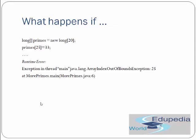For example: if we have a long array primes of size 20 and we try to assign a value at index 25 — primes[25] = 33 — this will give a runtime ArrayIndexOutOfBoundsException at index 25. Why? Because we have only allocated memory for 20 elements up to index 19, and index 25 has not been allocated.